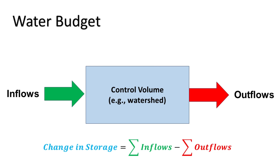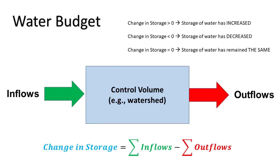The result is called the change in storage. If the change in storage gives a positive value, then the storage of water has increased in this control volume. If the change in storage gives a negative value, then the storage of water has decreased in this control volume. If the change in storage equals zero, then the total amount of water in this control volume has neither increased nor decreased. Notably, the change in storage is often reported as a time rate change, and this time interval can be of any length, be it a day, a month, or a year.